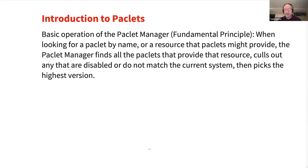This is really the fundamental principle of the PACLIT manager. When the system looks for a PACLIT by name, or looks for some sort of resource that a PACLIT might provide, the PACLIT manager finds all the PACLITs that provide that resource. Then it calls out any that are disabled or don't match the current system requirements. And then it picks the highest version — it uses the PACLIT that has the highest version number. Version numbers are of crucial importance in the PACLIT manager.